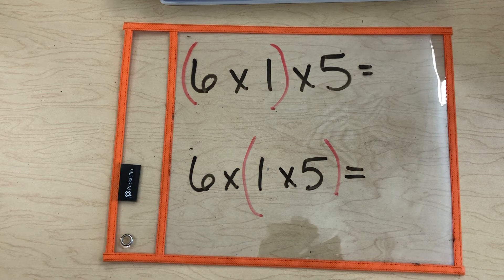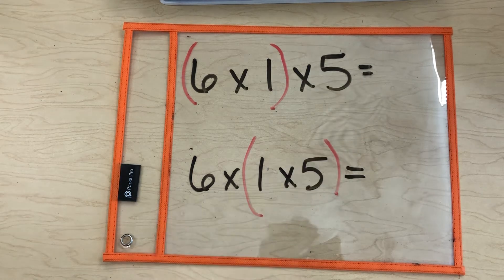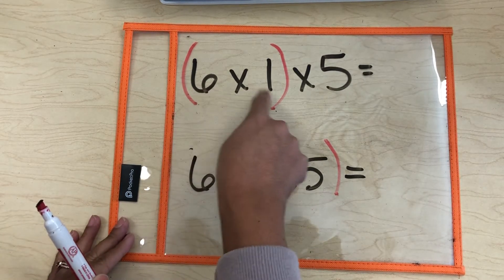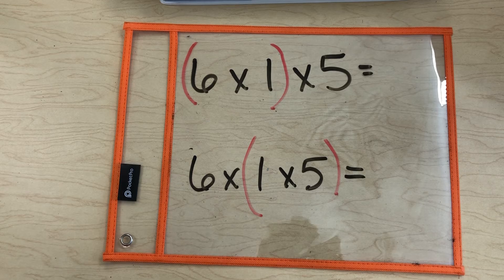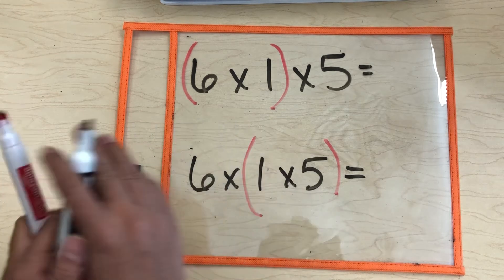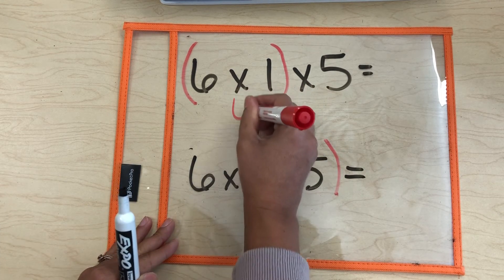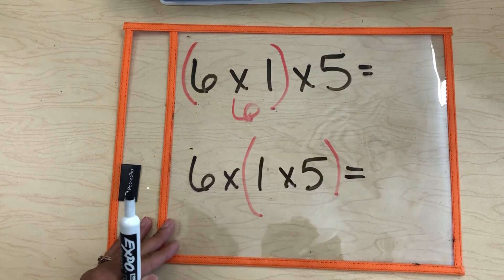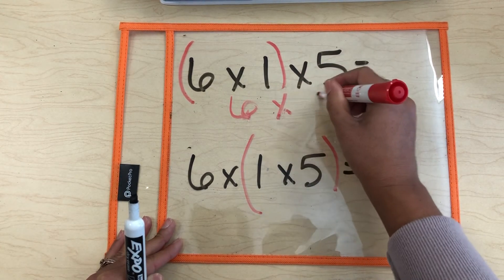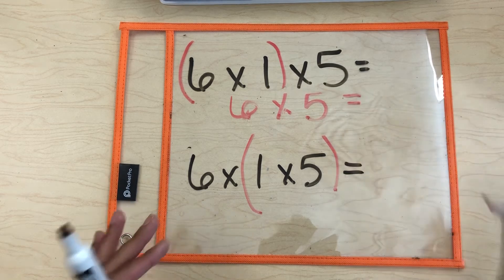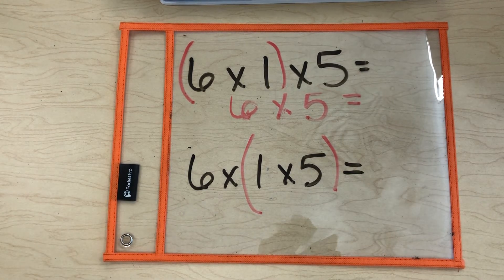Remember, we do what's in the parentheses first. So here we go. 6 times 1. What is 6 times 1? Awesome. 6 times 1 is 6. We drop down all of the rest of the things. 6 times 5. That is our new multiplication problem. What is 6 times 5?